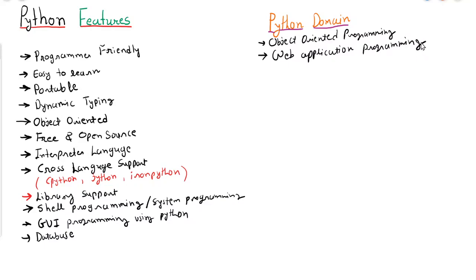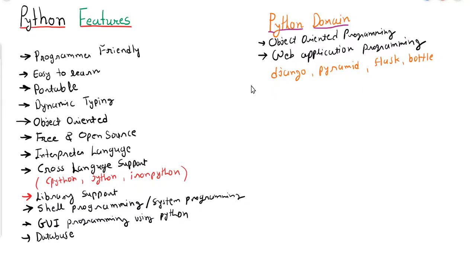For web application programming, frameworks like Django, Pyramid, Flask, and Bottle are available. Using these frameworks you can write code for web applications. If you want to develop a website or a content management system, those kinds of applications can be developed using Python web application development frameworks.